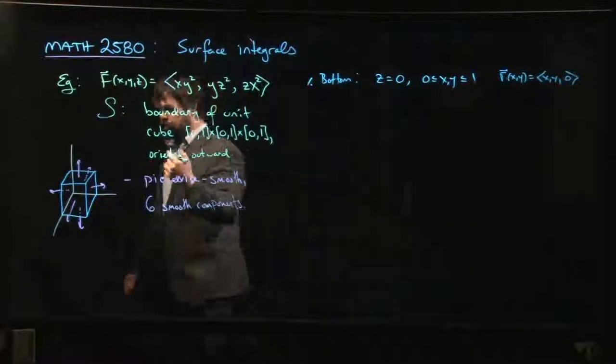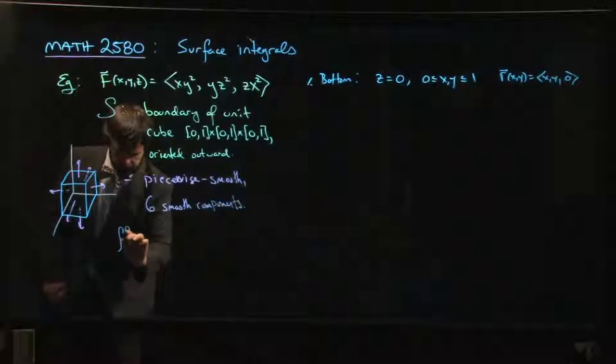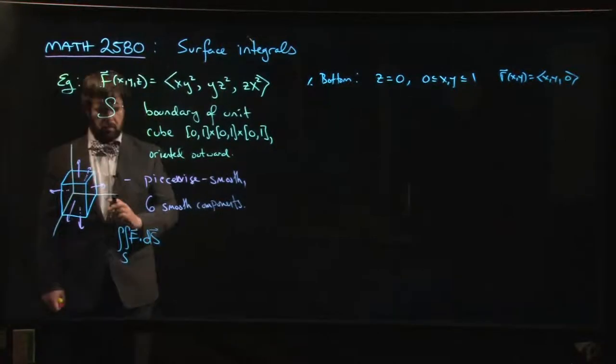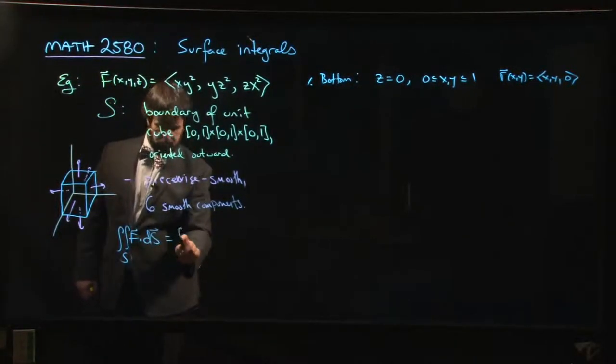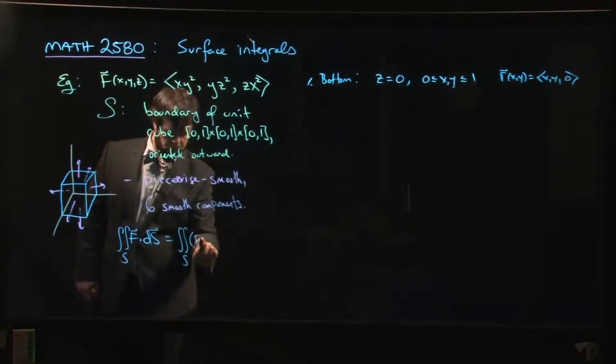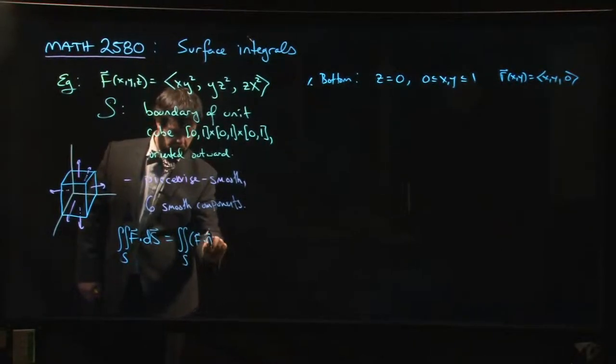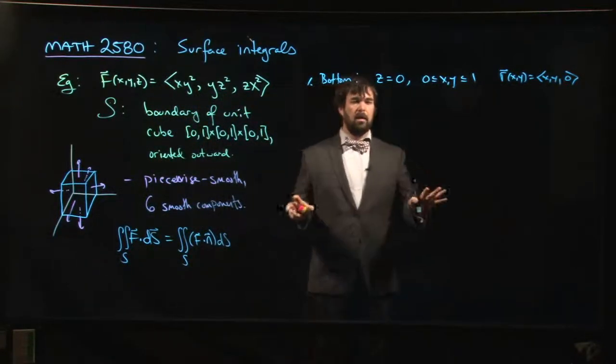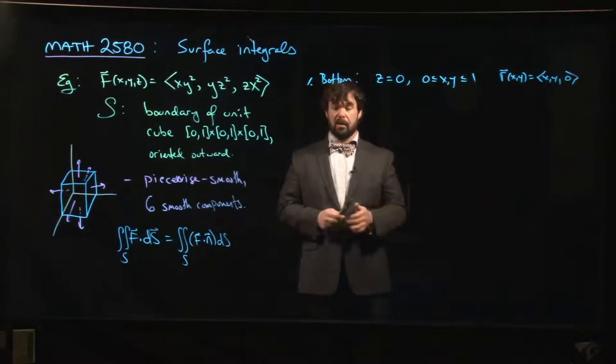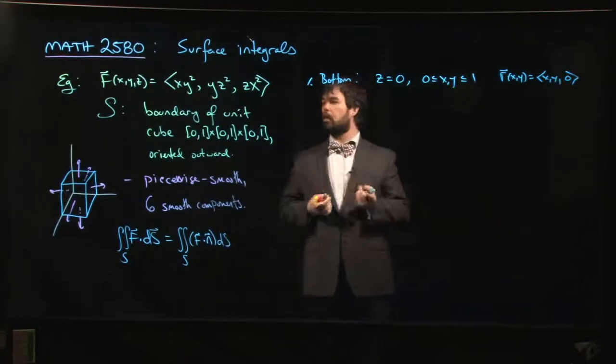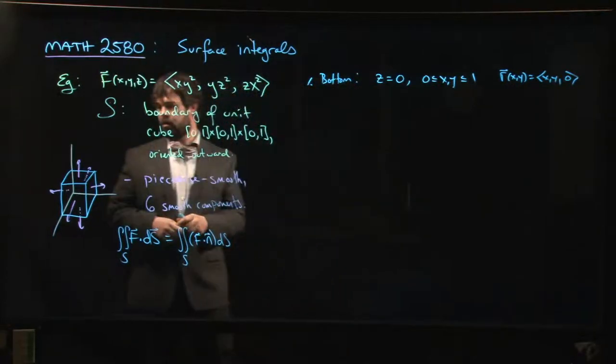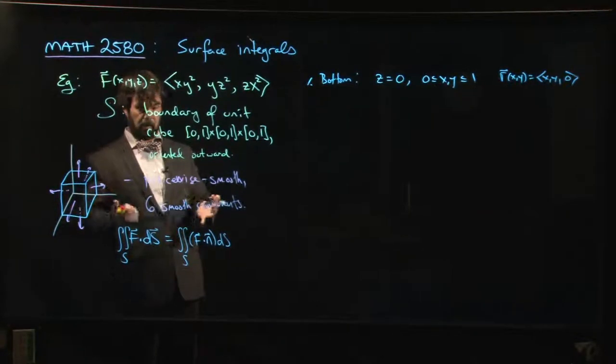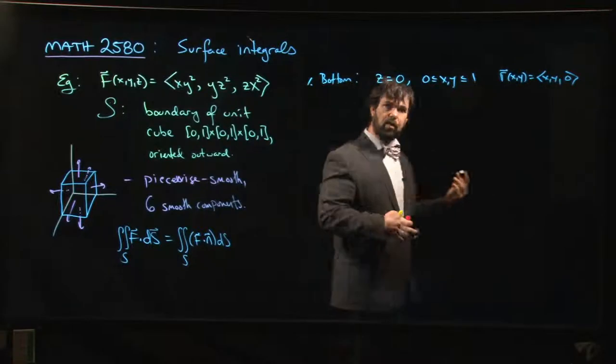This is a scenario where you might want to use... remember that we have two different ways of computing a surface integral. We can do it like this or we can do it like this where little n is the unit normal vector. This is a situation where the second formula might be easier to use because we know what a unit normal vector is for every one of these faces: plus i, minus i, plus j, minus j, plus k, minus k.